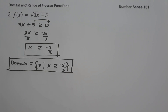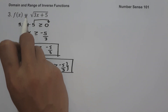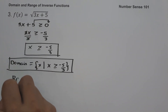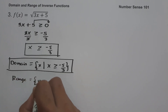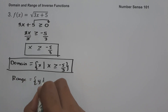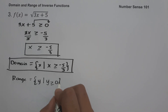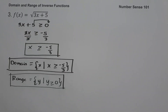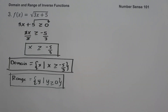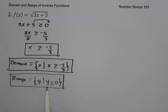To find the range of the given function, since the radical sign is positive, the range is the set of y values such that y is greater than or equal to zero. This will be the range of the given function. But if there were a negative sign, the range would be y less than or equal to zero.